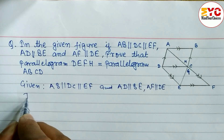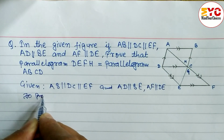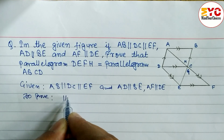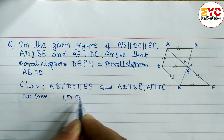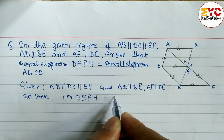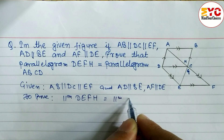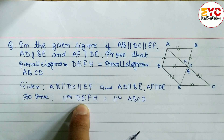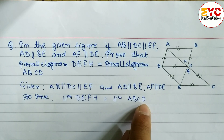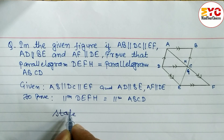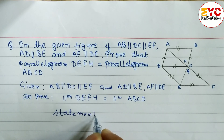These sides are parallel. Now, what do we have to prove? We have to prove that the area of parallelogram DEFH is equal to the area of parallelogram ABCD. We write the statement on one side and the reason on the other side.